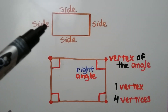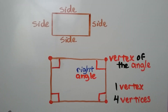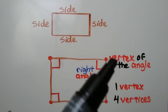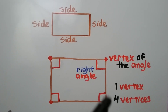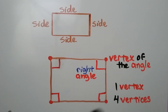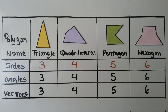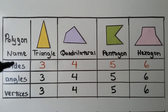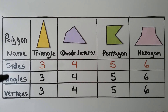Polygons have sides and vertices — that's the plural of vertex. You would have one vertex, and this quadrilateral has four vertices: one, two, three, four. It's also got four right angles on the inside. Here we have a chart with the polygon name, how many sides it has, how many angles it has, and how many vertices it has.